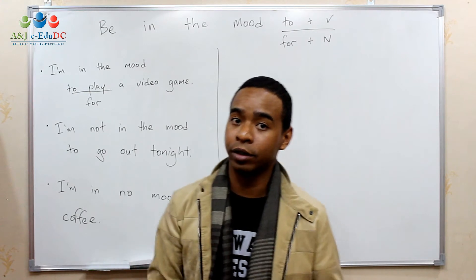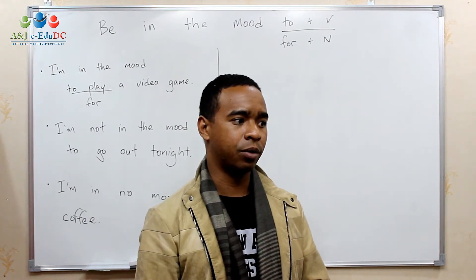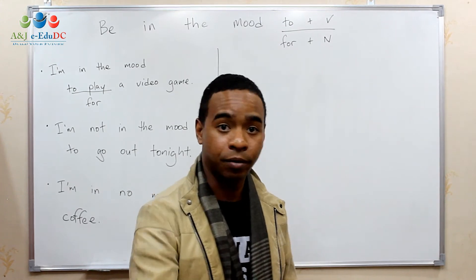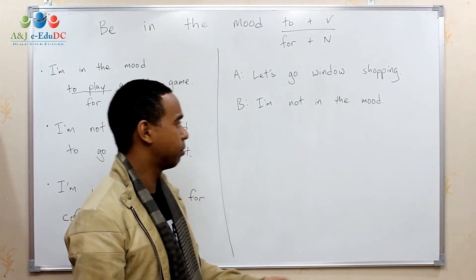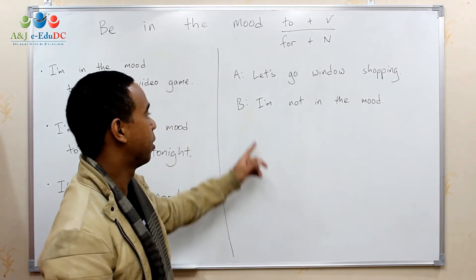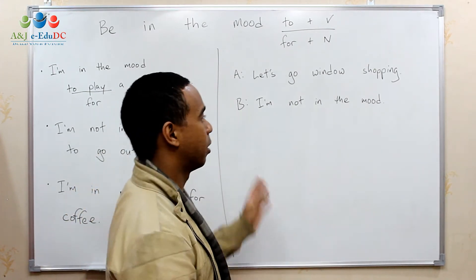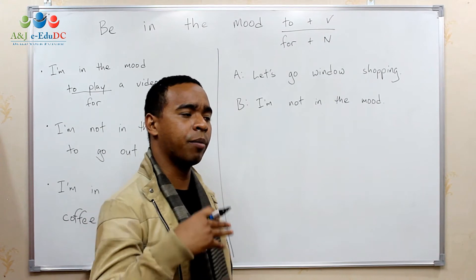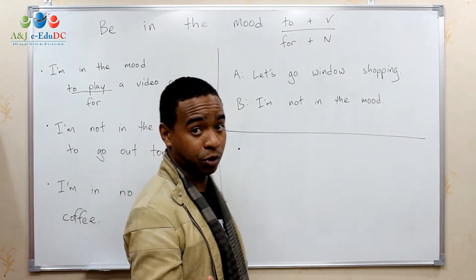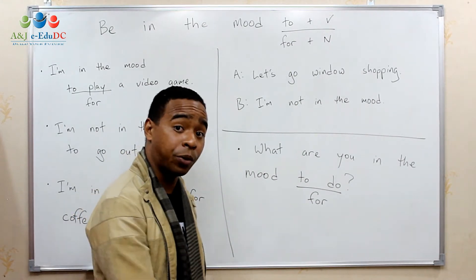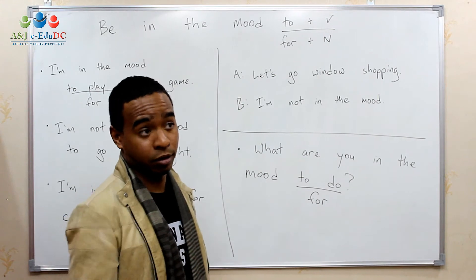Another way we use this expression is when we answer — when somebody suggests doing something. For example, a friend says 'let's go window shopping.' You can just say 'I'm not in the mood.' You don't have to say the full thing. You can also ask: 'What are you in the mood to do?' or 'What are you in the mood for?' — it's just another way to say 'what do you feel like doing?'